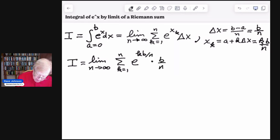Now what I'm going to do is I'm going to bring the b over n outside the summation. I can't bring it entirely outside the limit because the n depends on, the limit is on n. So let me write this as limit as n goes to infinity, b over n, summation k goes from 1 to n, e to the k b over n.